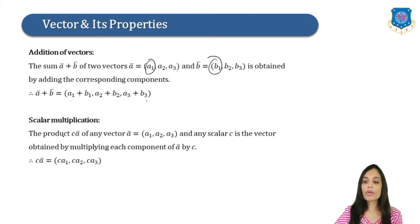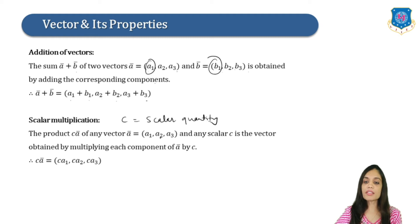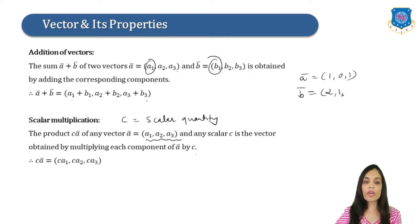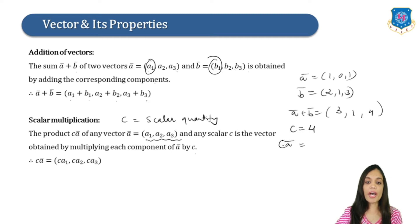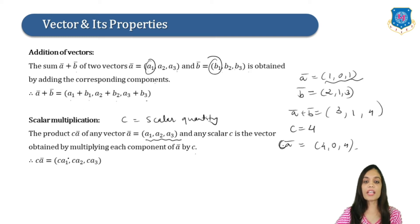Now scalar multiplication: the product C·A bar, where C is a scalar constant, is obtained by multiplying each component of A bar by C. So C·A bar = (CA1, CA2, CA3). For example, if A bar = (1, 0, 1) and B bar = (2, 1, 3), then A bar + B bar = (3, 1, 4). If C = 4, then C·A bar = (4, 0, 4).